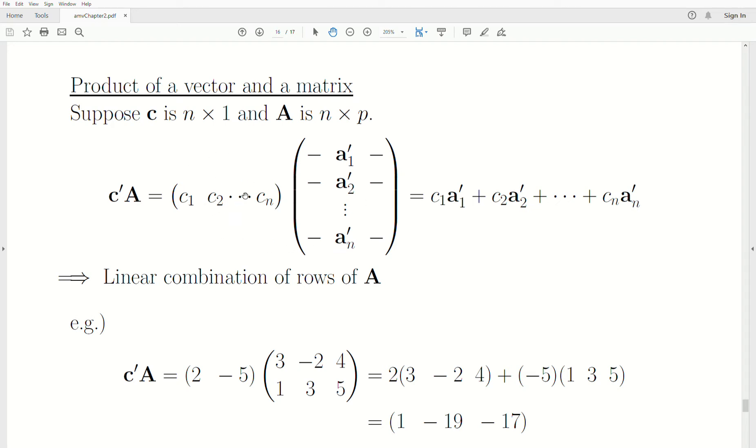So when we take this product, we take this row times the first column, this row times the second column, etc. But notice that C1 is always being multiplied by that first row, right? And that's what this represents. But then this becomes a linear combination of the rows or the row space of A.